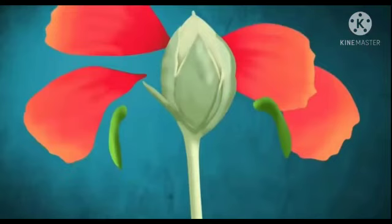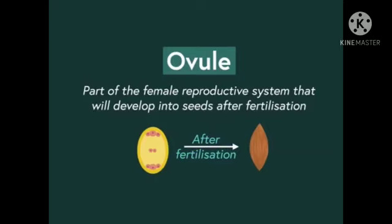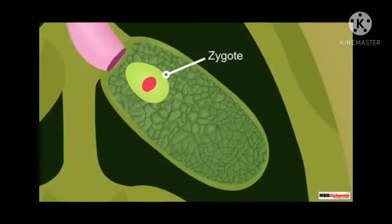the petals, style and stigma of the flower fall off. The sepal dries up and holds on to the ovule. Only the ovary remains. The ovary enlarges to form a fruit, and the ovary contains the fertilized ovule.